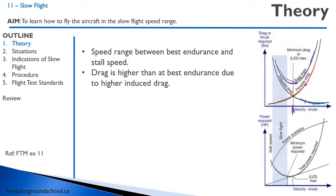Remember from your previous lesson — that minimum drag speed is called the best endurance speed. And the speed at the end of the curve is your stall speed; you can't go any slower than that. The speed range between best endurance and your stall speed is called your slow flight speed range.